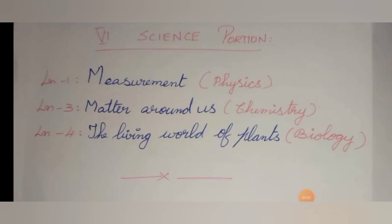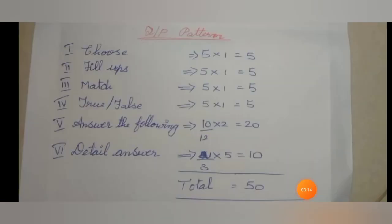We know that we have 3 lessons for our exam. Lesson 1: Measurements. Lesson 3: Matter Around Us. Lesson 4: Living World of Plants. This is our question pattern — 5 choose the correct answer, 5 fill in the blanks, 5 match the following, 5 true or false. Each carries 5 marks, so totally 20 marks.